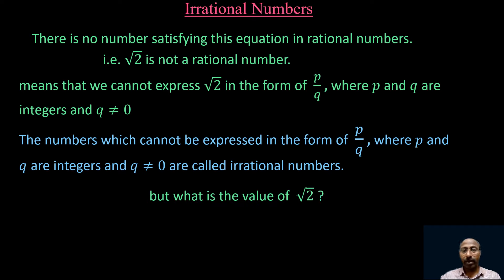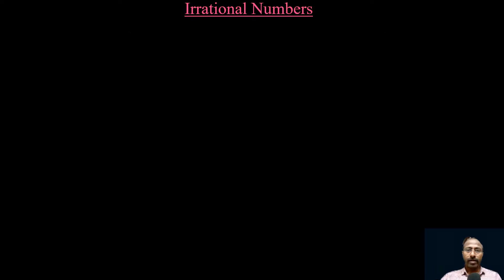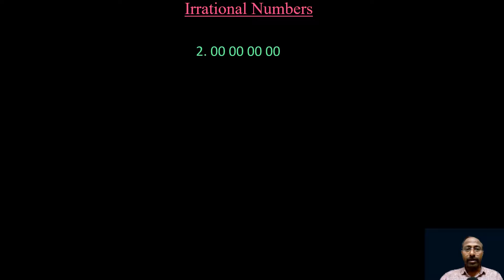The rational numbers can be expressed in the form p/q and the irrational numbers cannot. But what is the value of root 2? Let us find the value of root 2 up to 4 decimals. As we are finding the square root of 2 up to 4 decimals, we need to take 8 zeros after the decimal point of 2: 2.00000000.